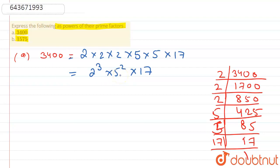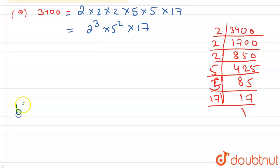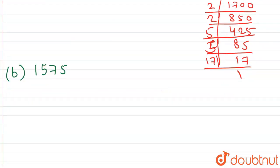So now second one is 1575. Part b: 1575. Now we have to take LCM of this number.